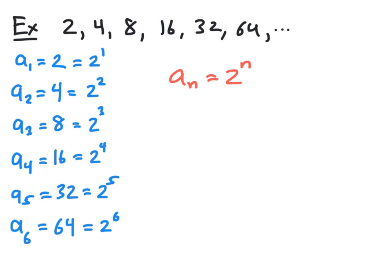Using curly brace notation, we can then denote this sequence by either the formula 2 to the n in curly braces, or if we wanted to be very specific about the values of n, we would start this at n equal to 1 up through infinity. And that way, we know that our first term is going to be 2 to the n, where n is 1, which of course is 2.